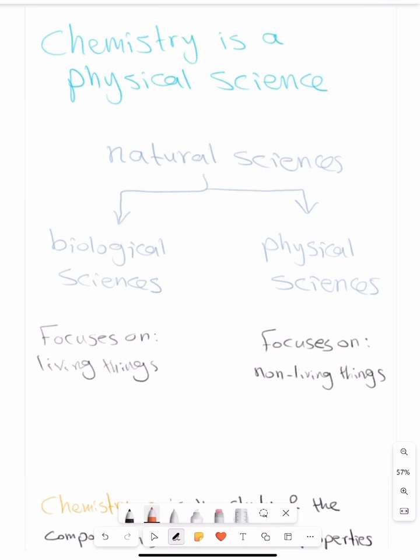Let's start with section number one which we'll be talking about how chemistry is a physical science. But first let's talk about how many types of natural sciences do we have. We have two.